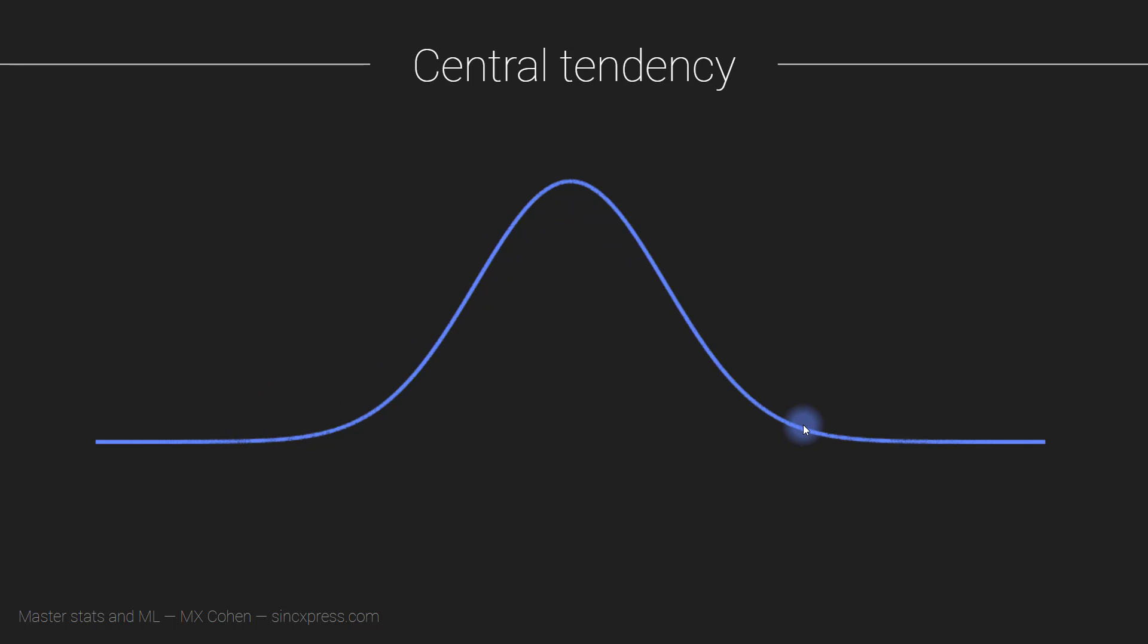So here, if you imagine that this is a histogram that's been sliced very fine, it doesn't make much sense to show bars anymore. That's why I'm showing lines.